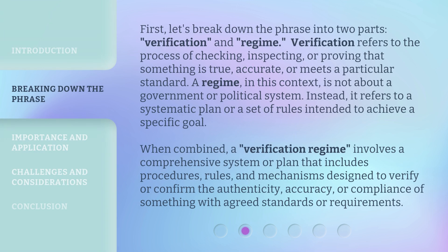First, let's break down the phrase into two parts: verification and regime. Verification refers to the process of checking, inspecting, or proving that something is true, accurate, or meets a particular standard. A regime, in this context, is not about a government or political system. Instead, it refers to a systematic plan or a set of rules intended to achieve a specific goal. When combined, a verification regime involves a comprehensive system or plan that includes procedures, rules, and mechanisms designed to verify or confirm the authenticity, accuracy, or compliance of something with agreed standards or requirements.